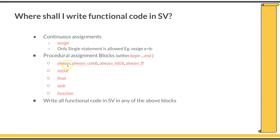If you want something executing all the time, you add it within an always block. Apart from the always block, there are two more procedural blocks: task and function. You can write your functional code within a task or within a function, and you can call these from anywhere within the three blocks — always, initial, or final. When you write a task or function, you don't need to use explicit begin-end blocks because there are built-in begin-end constructs. A task starts with the keyword task followed by the task name and ends with endtask. Similarly, a function starts with function and ends with endfunction.